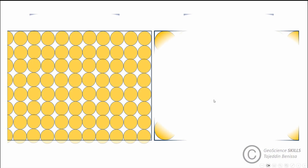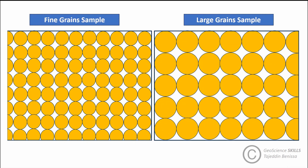Grain size does not have a direct impact on porosity, as other characteristics such as sorting and grain shape must also be considered. However, in well-packed unconsolidated sandstone, porosity commonly decreases when large grains are dominant, unlike fine-grained sandstone where porosity would increase. For example, in two samples of unconsolidated sandstone with the same surface area and cubic packing, porosity in the large-grain sample represents about 42% of the sample, while porosity in the fine-grain sample represents around 88%. Thus, fine-grain samples have higher porosity compared to large-grain samples of the same volume.